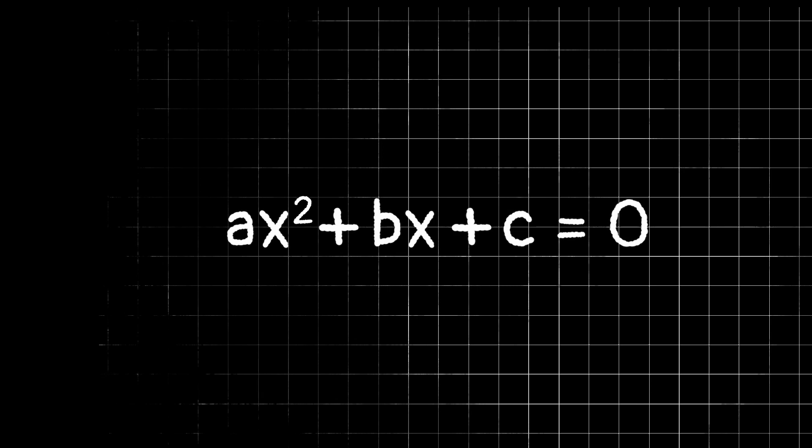But we could at least start by getting this x squared to be alone, by dividing by a to get rid of the coefficient. But if we divide this first term by a, then of course we have to divide every term by a in order to keep the equation in balance. So now we have x squared plus b over a x plus c over a equals 0.